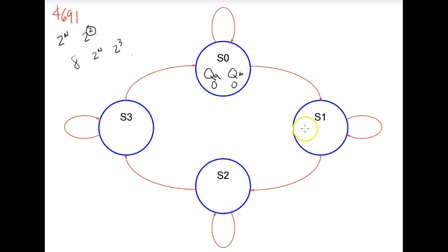In state one, QA and QB are going to be zero and one. Here in state two, QA QB is one and zero. And finally in our last state, we are one one. So you see we just count through binary through our states.